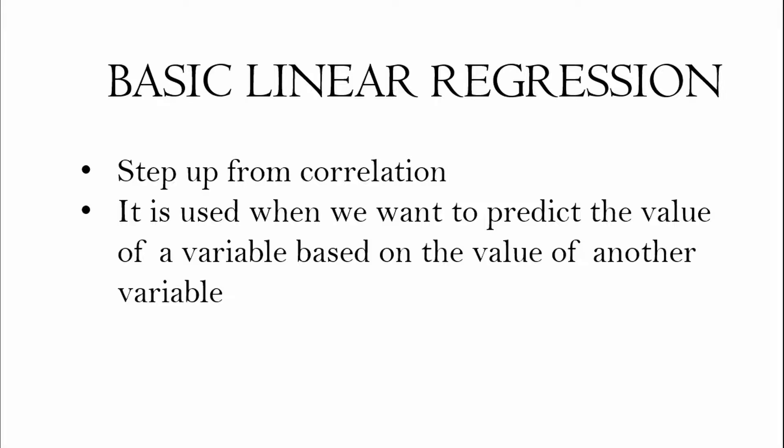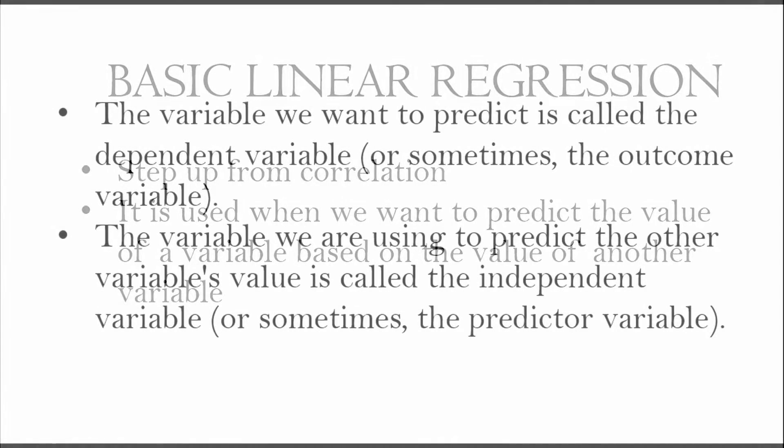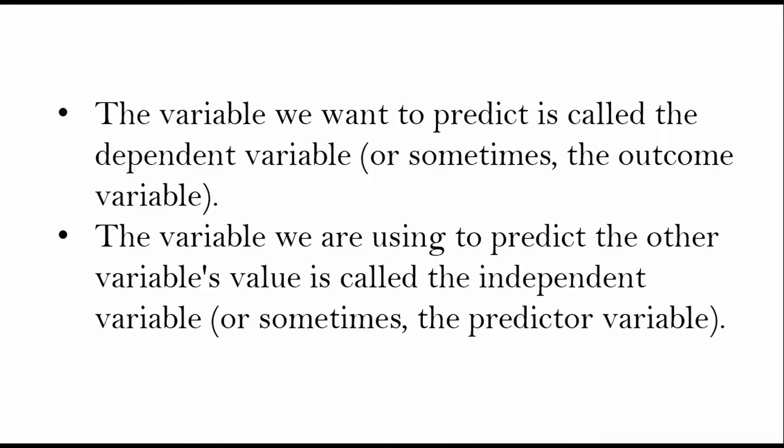The variable we want to predict is called the dependent variable, or also the outcome variable, because it is the outcome of what we're trying to predict. The variable we use to predict the other variable's value is called the independent variable, or sometimes the predictor variable.